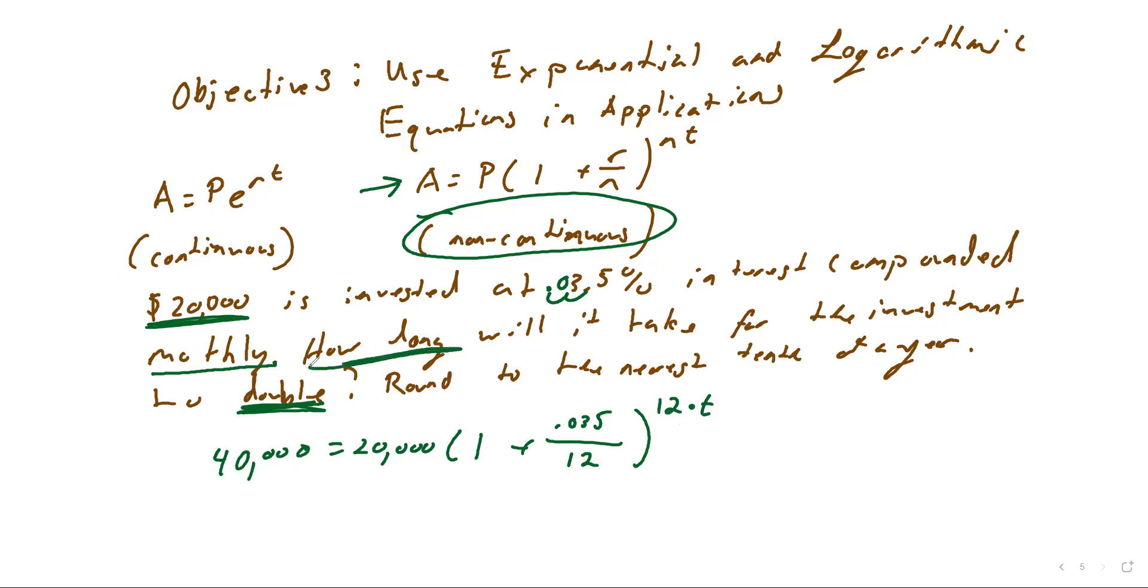So we're just going to try to isolate this and clean it up as best as we can. First thing I want to do is divide by 20,000. And that guy right there ends up just being 2. And then I'm going to figure out what this is. 0.035 divided by 12 gives us a pretty long decimal, plus 1 gives us something like this: 1.00291667 raised to the 12t.